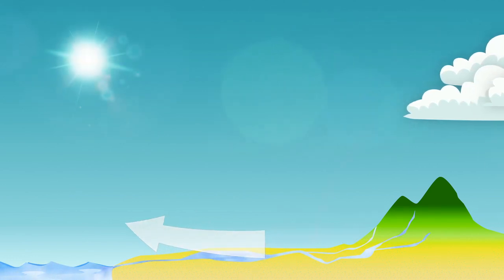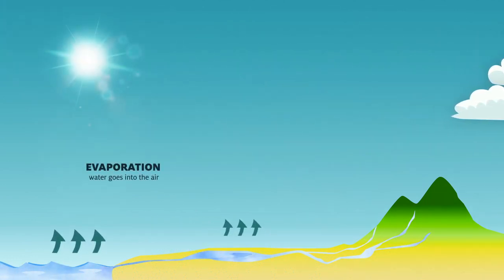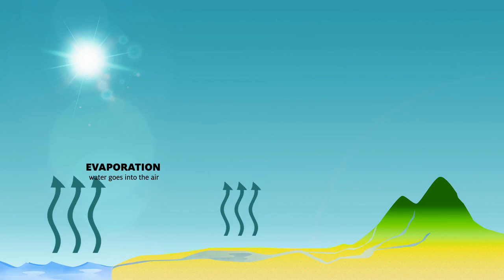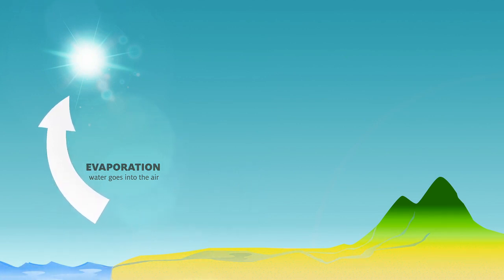When the sun heats up liquid water on land or in lakes or oceans, evaporation takes place. With heat, the water turns from a liquid form to a gas form and goes into the air, like the way that puddles evaporate after a rainstorm.